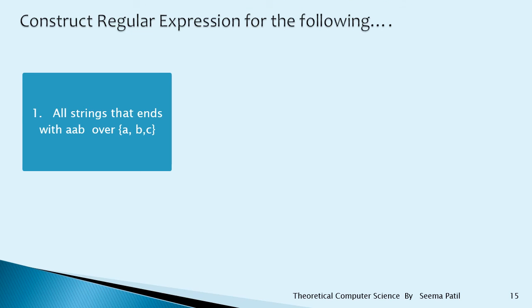Construct regular expressions for the following. First: all strings that end with AAB over {A, B, C}. Three inputs are A, B, C and it should end with AAB, so write AAB at the end. Before that there can be any number of A, B, C, so write (A + B + C)*. The regular expression is (A + B + C)*AAB.